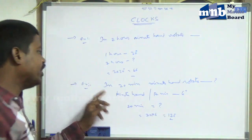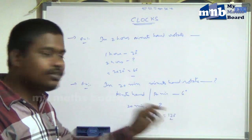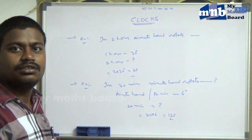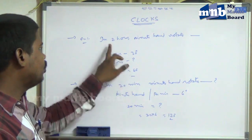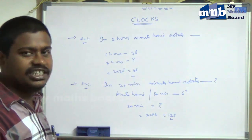So in 20 minutes, the minute hand rotates 120 degrees. And in two hours, the minute hand rotates 60 degrees.